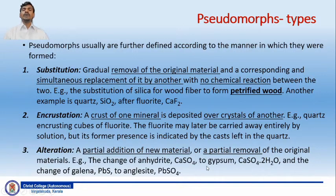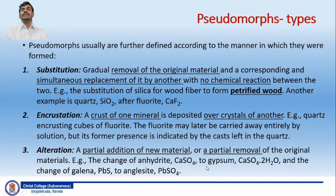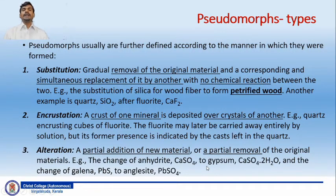There is no chemical reaction between the two minerals. An example is the substitution of silica for wood fiber to form petrified wood — it preserves all the fibrous nature of the wood but is essentially composed of silica. Another example is quartz (SiO₂) after fluorite (CaF₂). The substitution causes simultaneous replacement of one mineral by another — that is what we call substitution pseudomorphs.